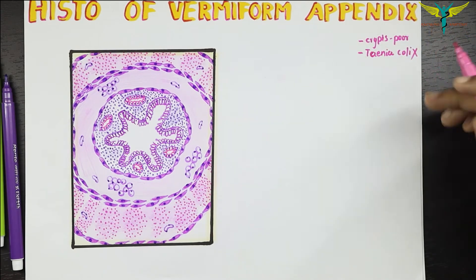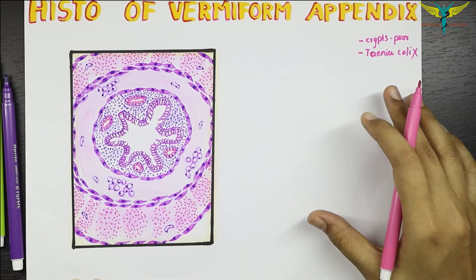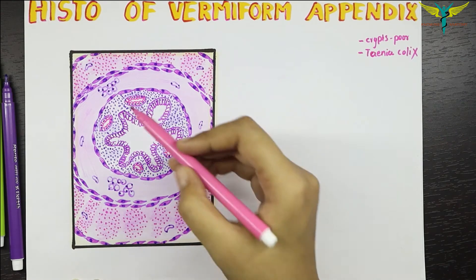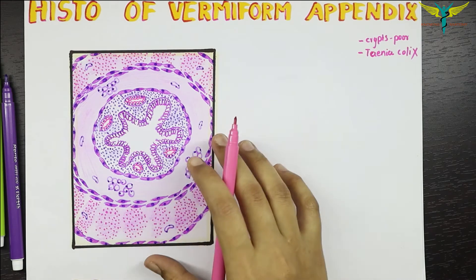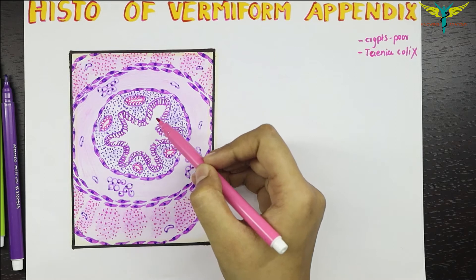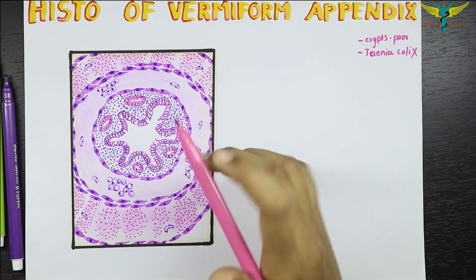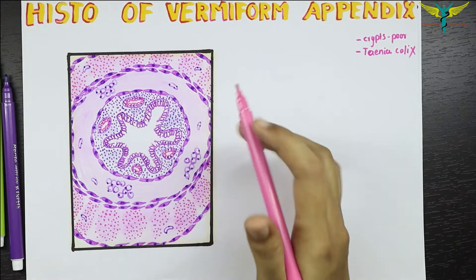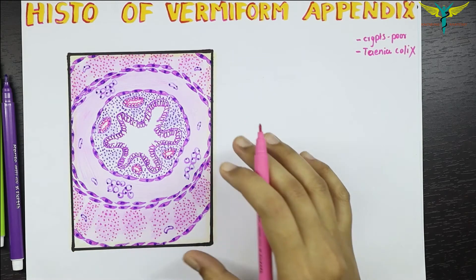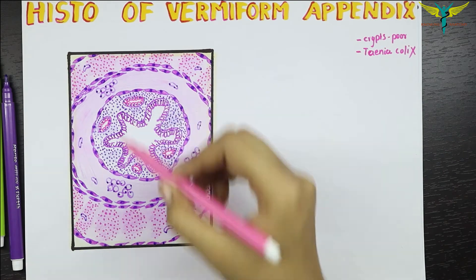The submucosa of the vermiform appendix contains abundant lymphoid tissue that may completely fill the submucosa. This lymphoid tissue is not present at birth. It gradually increases and is best observed in children at about 10 years of age. Later, we can note a progressive reduction in the quantity of the lymphoid tissue.